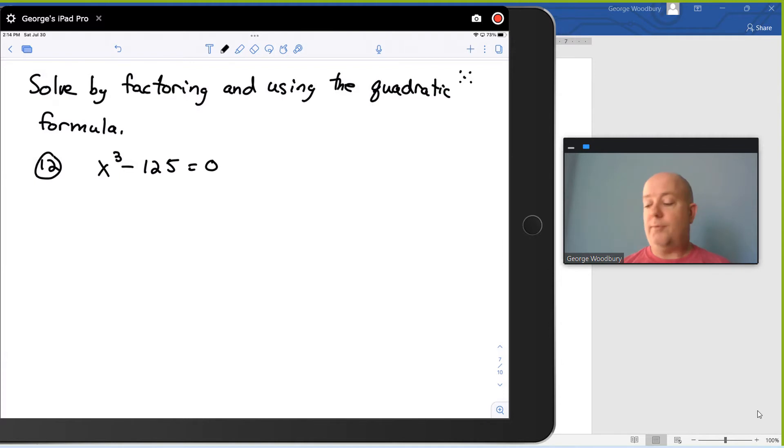So the first thing we're going to do is factor, and this is what we call a difference of cubes. This is x cubed minus 5 cubed. And in general when you have x cubed minus a cubed, that can factor to be x minus a times x squared plus ax plus a squared. That's the formula for factoring a difference of cubes.